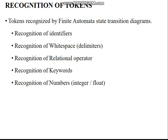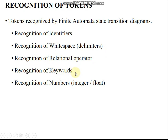Tokens are recognized in the compiler using finite automata state transition diagrams. These state transition diagrams are used to recognize identifiers, whitespace including delimiters, relational operators, keywords, and numbers — whether integer, float, or double.